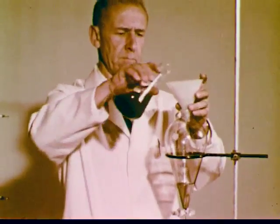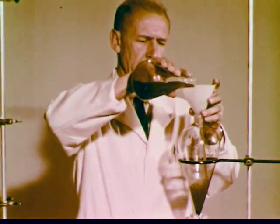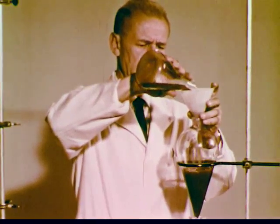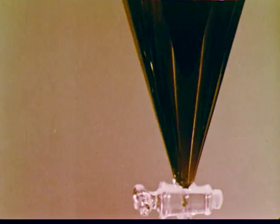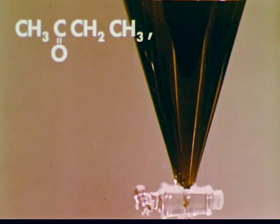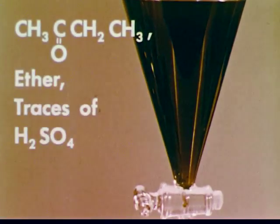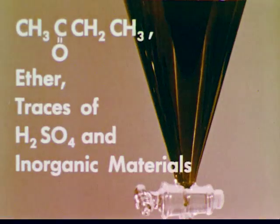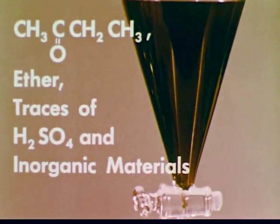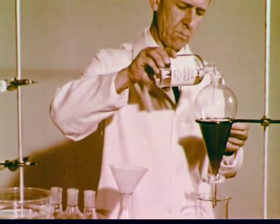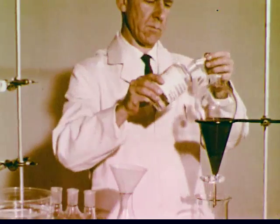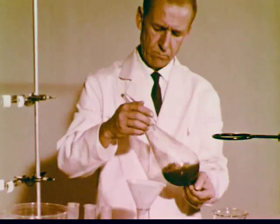All of the ether extracts are now returned to the funnel. The ketone obtained in the synthesis is in this ether solution, which also contains ether, traces of sulfuric acid, and some of the inorganic materials used in the synthesis. Addition of an aqueous solution of sodium hydrogen carbonate neutralizes the sulfuric acid. The reaction of the bicarbonate with sulfuric acid results in the formation of carbon dioxide, and the pressure of this gas is relieved during the washing operation.